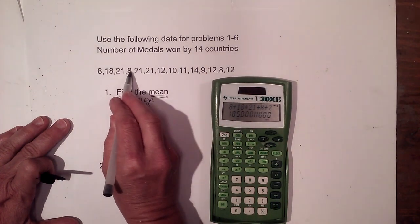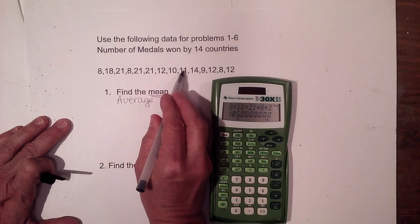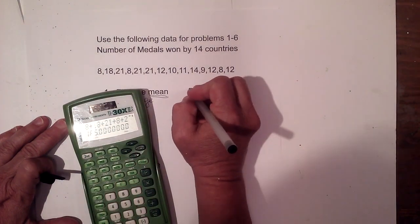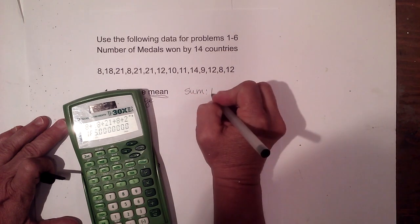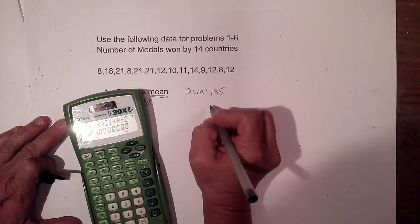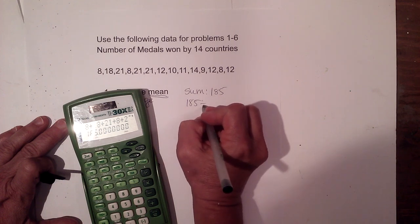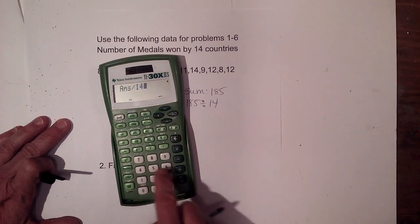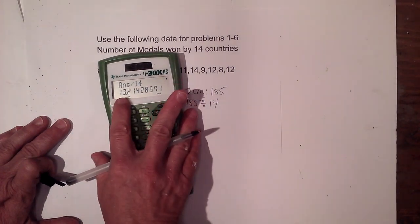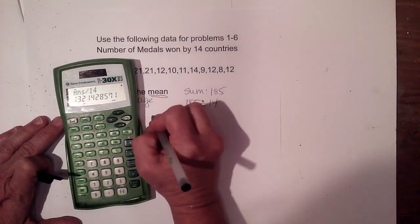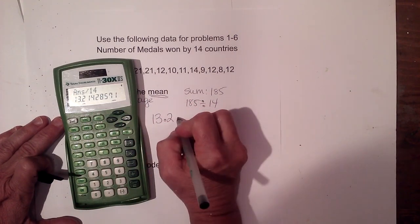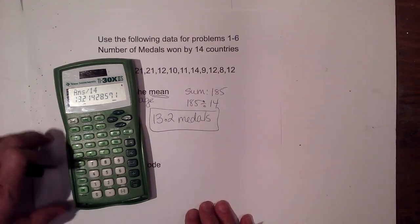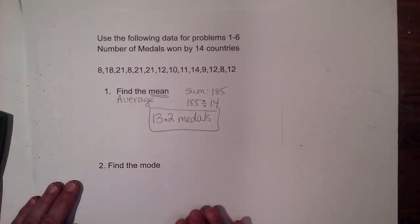We count up 14 different countries. So if we take the sum, which is the total of 185, and divide that by how many countries we have — which is 14 — to find the average medal count, we can see that 13.2 is the average. So 13.2 medals is the average number of medals between those 14 countries. That's how you find the average or the mean.